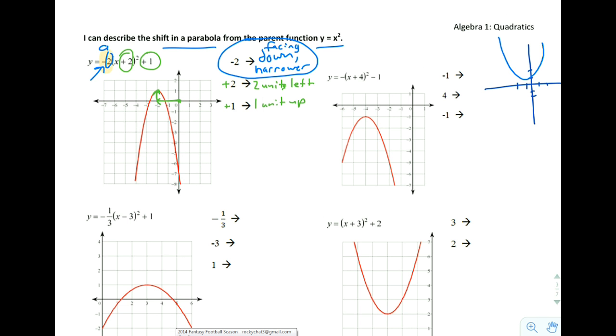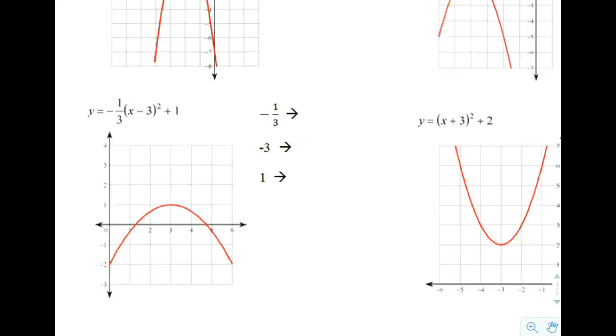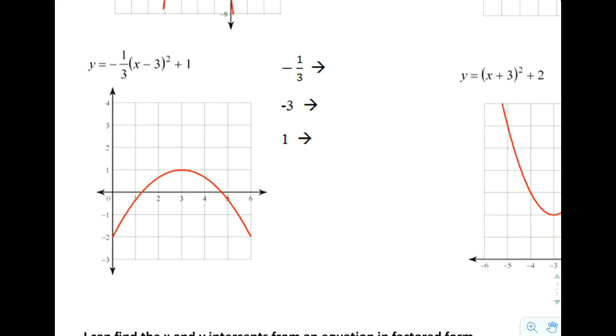I'm going to get you started on the next example down below here. It says that we have y equals negative 1 third times x minus 3 squared plus 1.